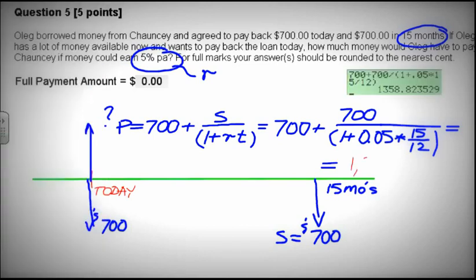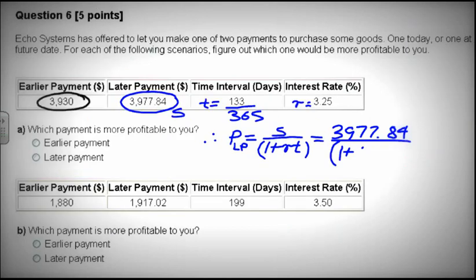So those two payments, $700 today and $700 15 months from now, are equivalent to $1,358 today at time zero. We want to compare which option to choose, whether earlier payment or later payment. We just want to find principal.